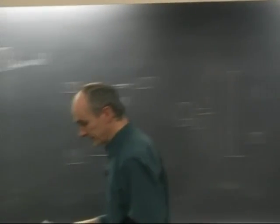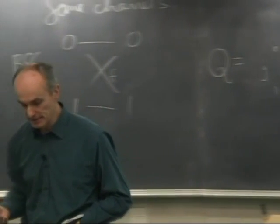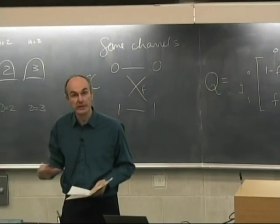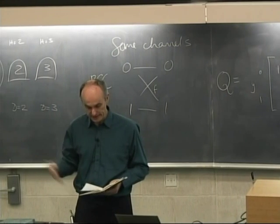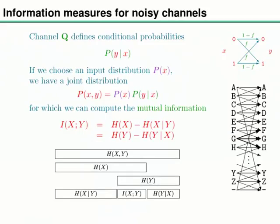What we're going to do with these channels is first imagine spraying random data from an input distribution that we define into the channel, thus defining a joint ensemble P(X) × P(Y|X). We'll do inference and compute how much information is conveyed. Let's start with the binary symmetric channel.